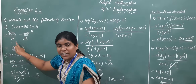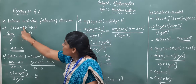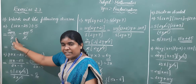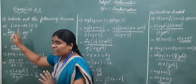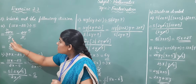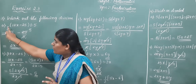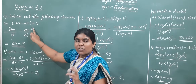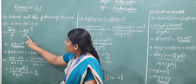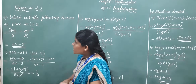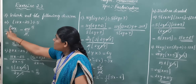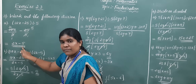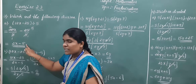10x divided by 5, minus 25 divided by 5. Using your 5 times table: how many times do you multiply to get 10? 5 twos are 10, so you get 2 times x. For 25: 5 fives are 25. The remaining terms are 2x minus 5. So 2x minus 5 is the final answer.